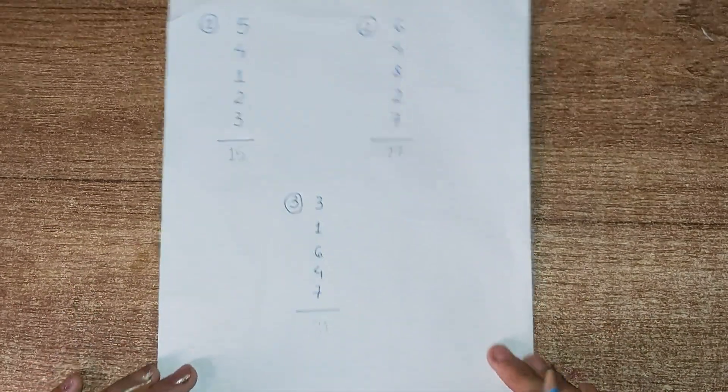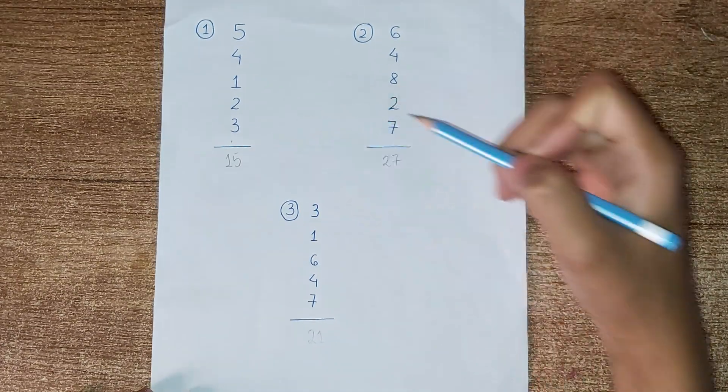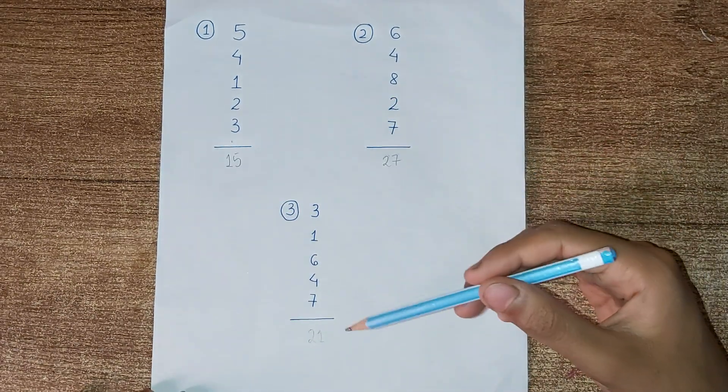So the answer of first question is 15, second question 27, third question is 21.